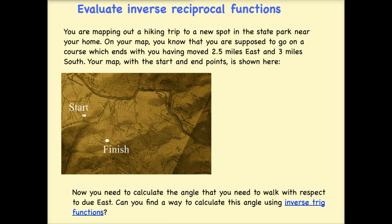You might remember that if we are using these trig functions, we need to draw a right triangle. Based on our data, we have to go 2.5 miles east. So if we were here at the start and we walked east, we would be walking this way. And then we need to go 3 miles south down to the finish line. We can connect our route and then create a right triangle and label the sides. Here we have 2.5 and here we have 3.